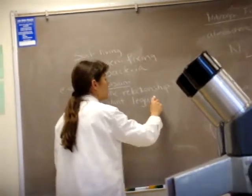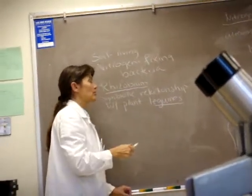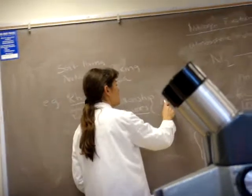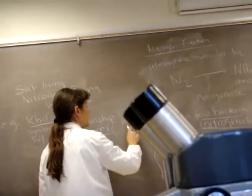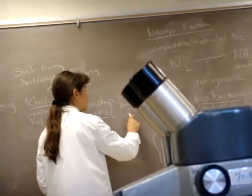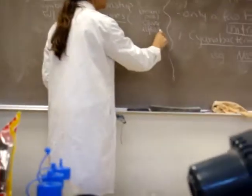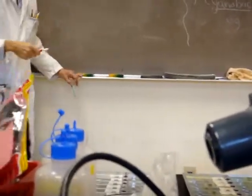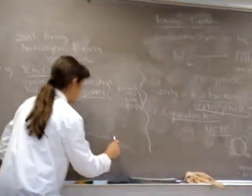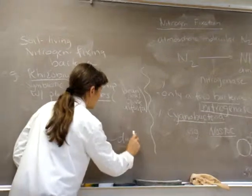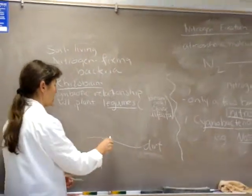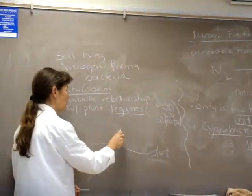And legumes, you guys are probably pretty familiar with legumes. Legumes include beans, pea, clover, alfalfa. These are all members of this cool legume family. So let's just pretend this is the dirt. Kind of wavy dirt. This is the dirt. And let's say this is our bean or pea plant. It's right here.